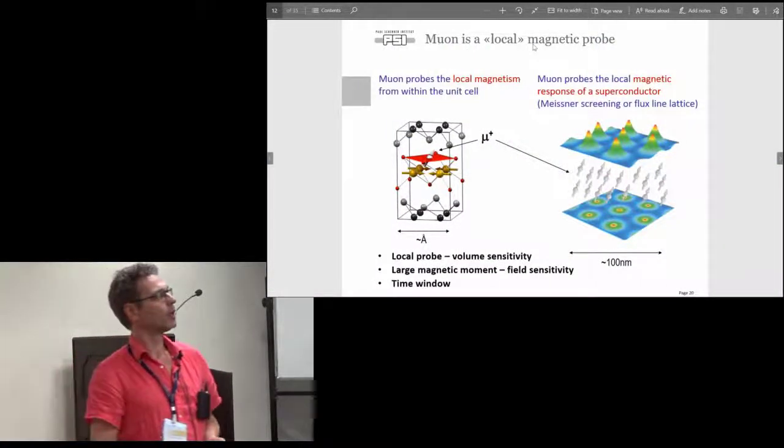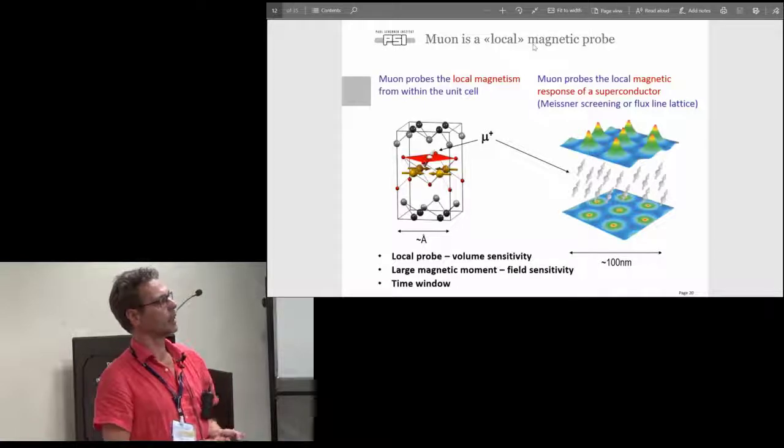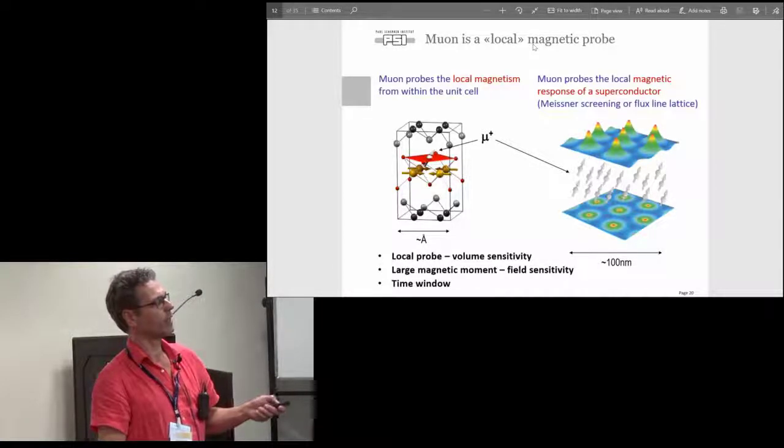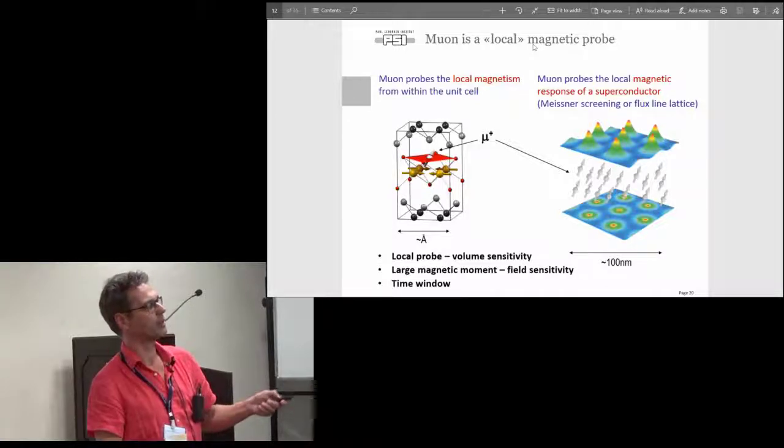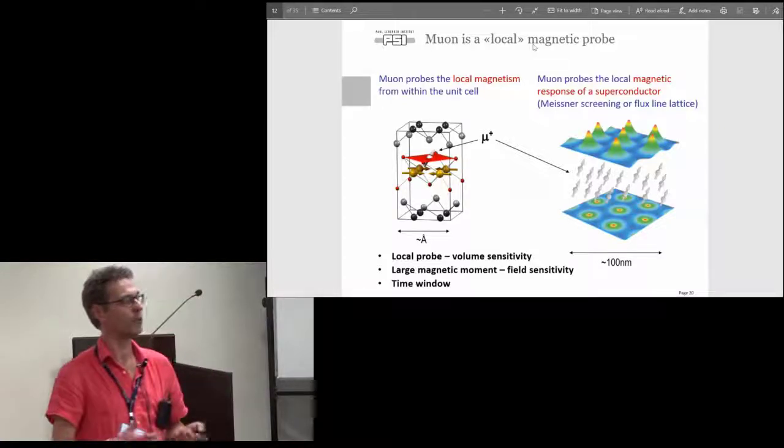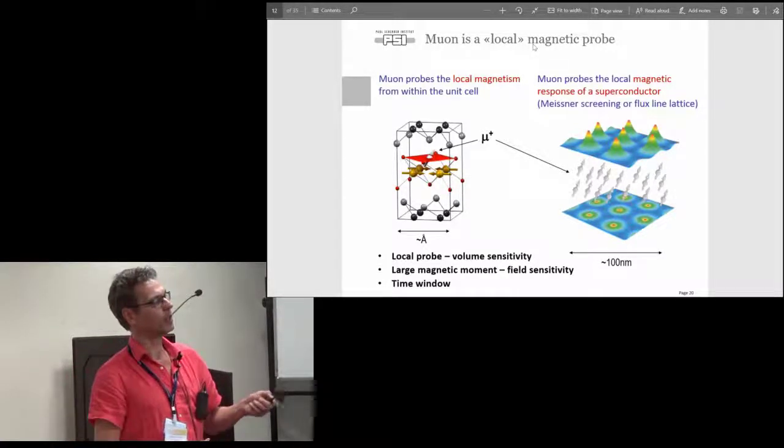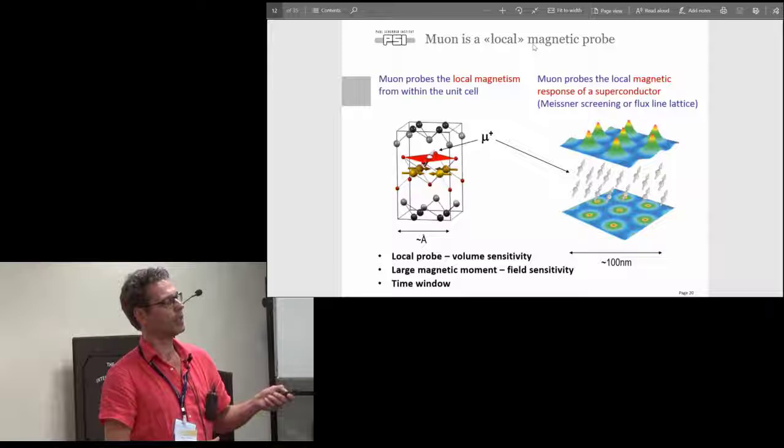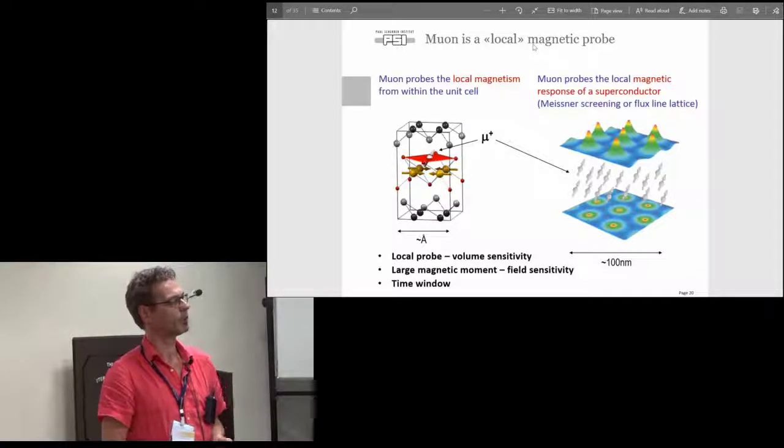The muon is a local magnetic probe. It stops somewhere in the unit cell of your sample and it probes the local magnetism in this unit cell. As we heard, in most cases it does not affect or stimulate any weird things, so it measures the intrinsic properties.